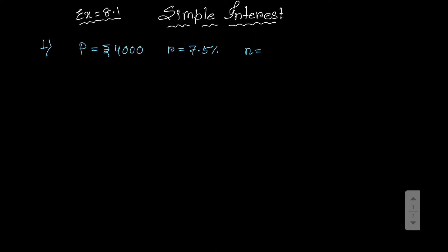Remember, you have to convert the months into years. So if n equals years, that means three years plus three months — months means 3 by 12, so that equals one by four. So three and one-quarter years, or 13 by 4 years. Also find the amount.